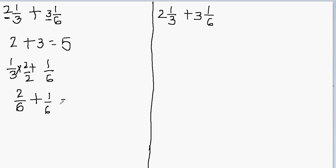Now I have to add the numerators. 2 plus 1 is 3, and you don't add the denominator — so the denominator will still remain 6.